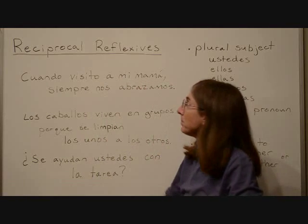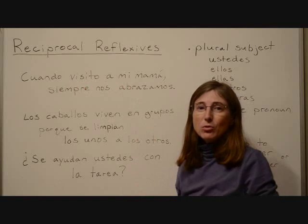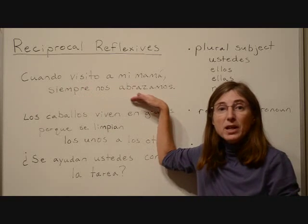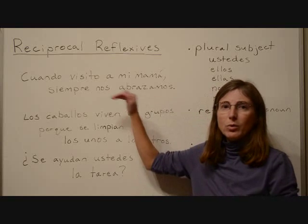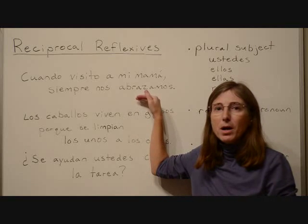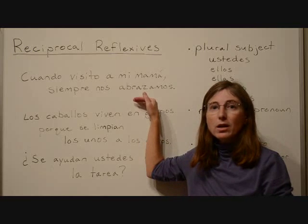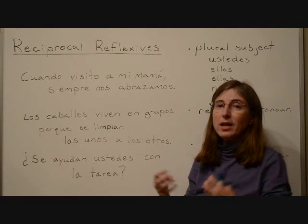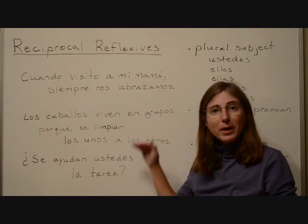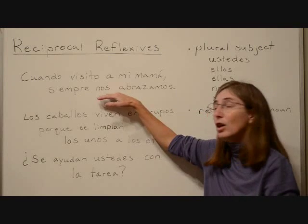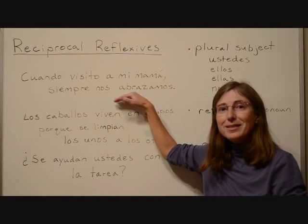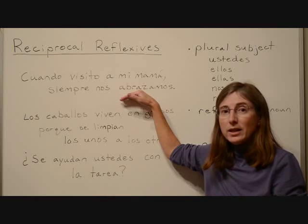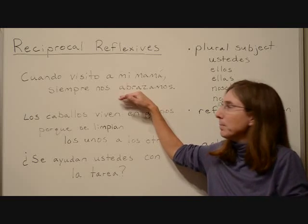Here's an example: 'Cuando visito a mi mamá, siempre nos abrazamos.' — When I visit my mom, we always hug one another. Now in English we have to say 'one another,' but in Spanish because of the verb construction 'nos abrazamos,' it's implied that we're hugging each other. We don't have to say 'one another.'